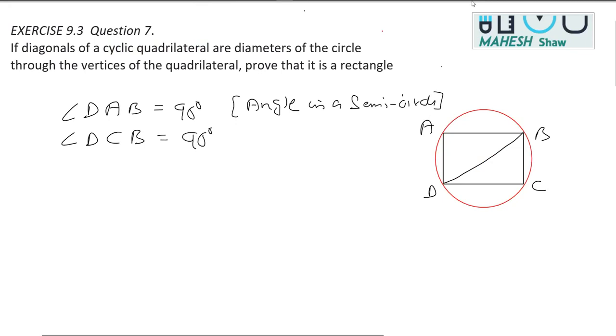Now consider the other diagonal. For example, if I join AC here, AC is also the diameter. This is mentioned in the question—the diagonals are diameters. Since AC is a diameter, again this is a semicircle and angle in a semicircle is a right angle. Therefore, angle ABC is equal to 90 degrees.